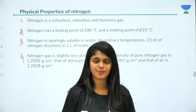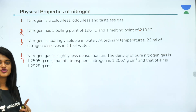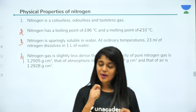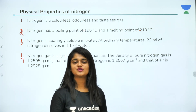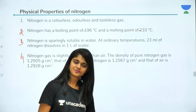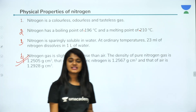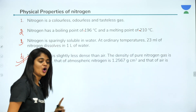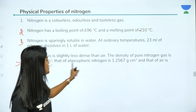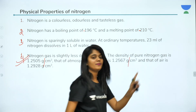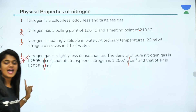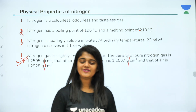Third physical property: nitrogen is sparingly soluble in water. At ordinary temperature, only 23 mL of nitrogen dissolves in 1 liter of water — so it is very feebly soluble. Fourth: nitrogen gas is slightly less dense than air. The density of pure nitrogen is 1.25 g/cm³, atmospheric nitrogen is also about 1.25 g/cm³, while air is 1.29 g/cm³. So nitrogen is less dense compared to air.